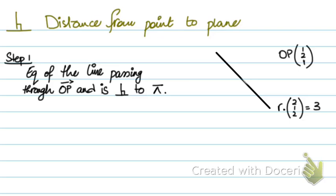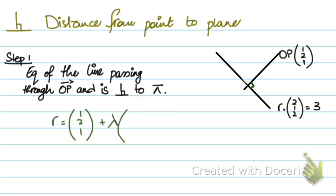First step, I need to make the equation of the line passing through point OP and perpendicular to the plane. To form the equation of a line, I first need a fixed point. Since this line passes through OP, that point becomes the fixed point: r = (1, 2, 1) + λ times the direction vector. Since this line is perpendicular to the plane, and the normal is also perpendicular to the plane, the normal vector (2, 1, 2) becomes the direction vector for this line.